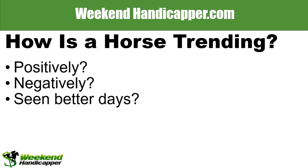A key component of a form cycle is how the horse is trending. This is especially true with young horses — two-year-olds going into their three-year-old careers — and lightly raced horses where you don't have much handicapping data. It's up to you to project whether the horse is trending upwards or downwards in a negative fashion, which is very tough to determine.